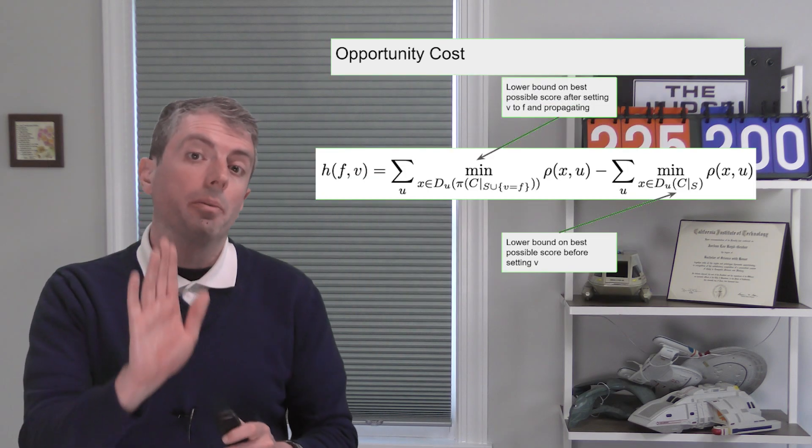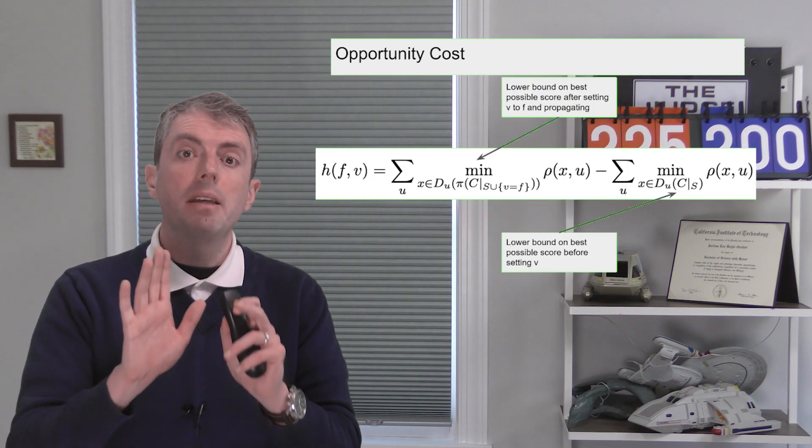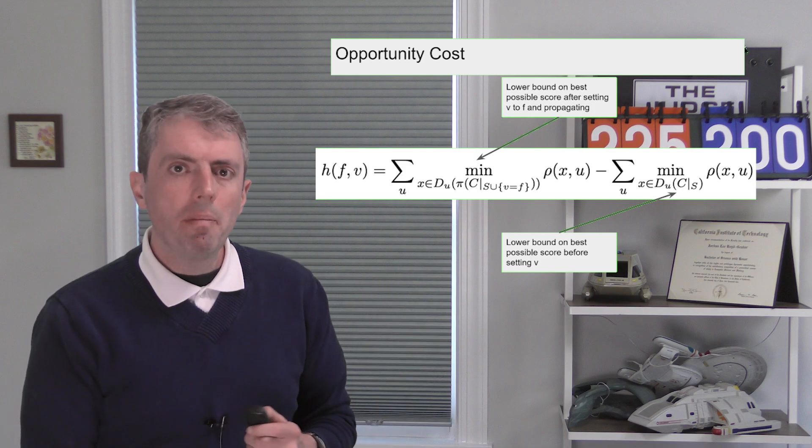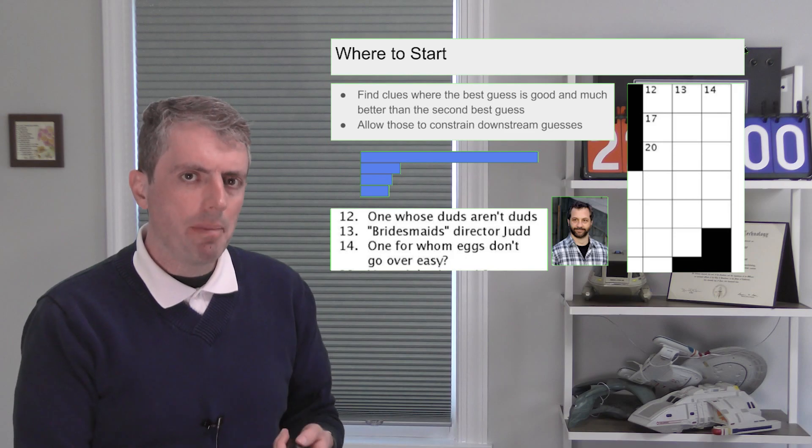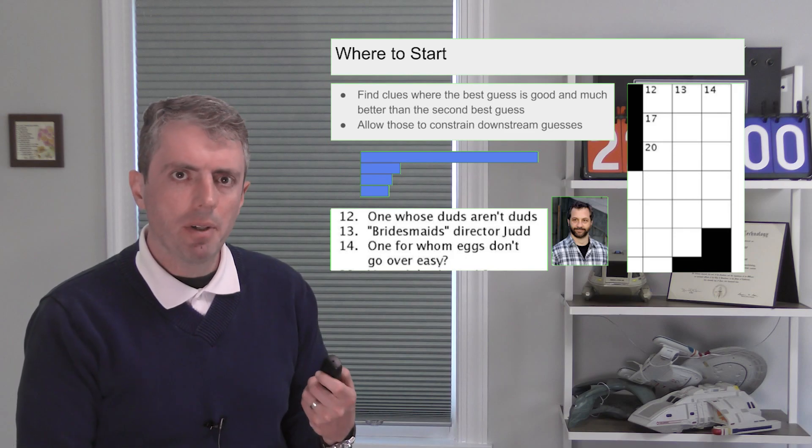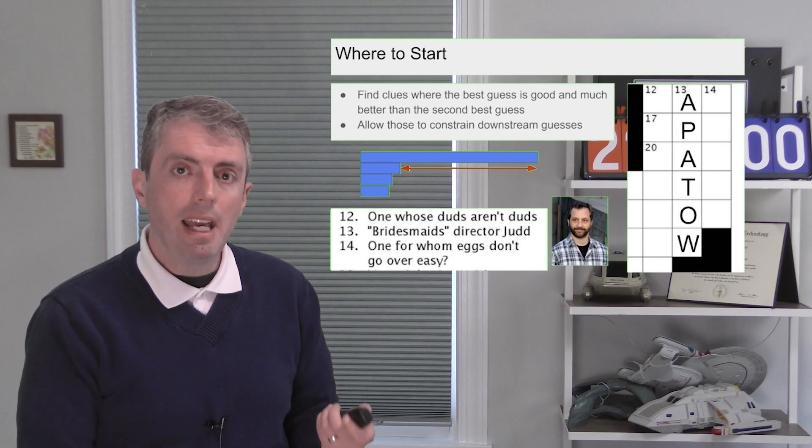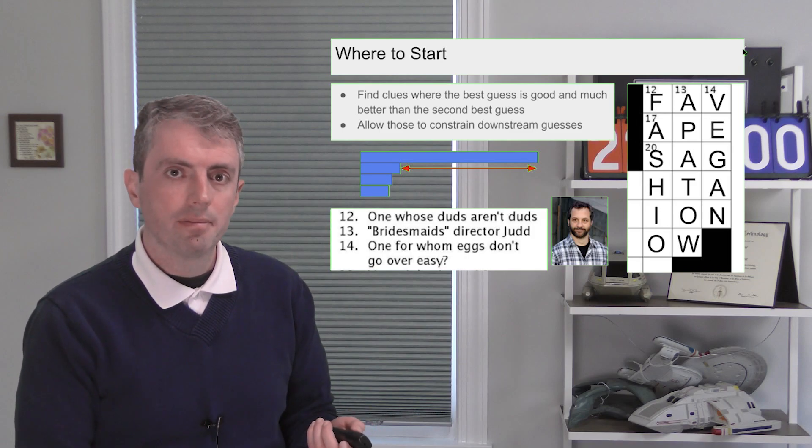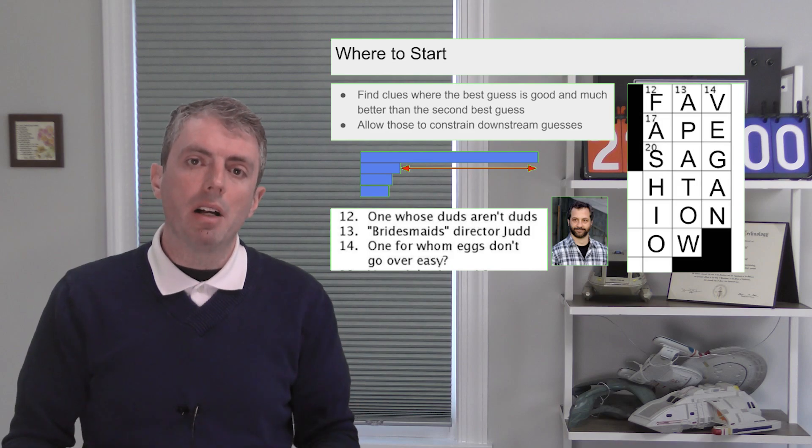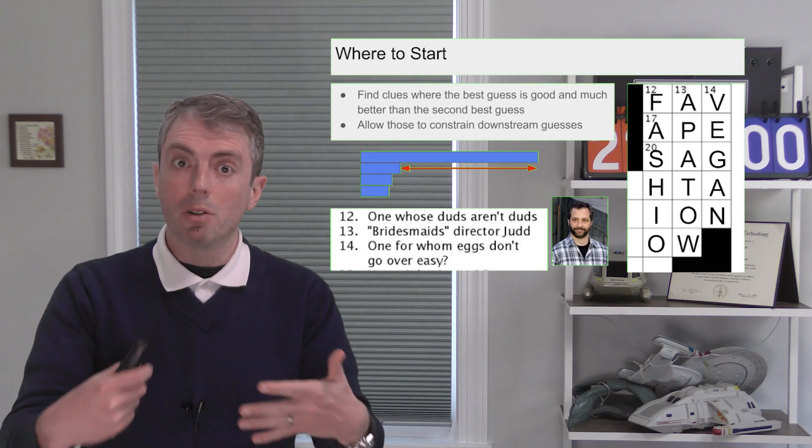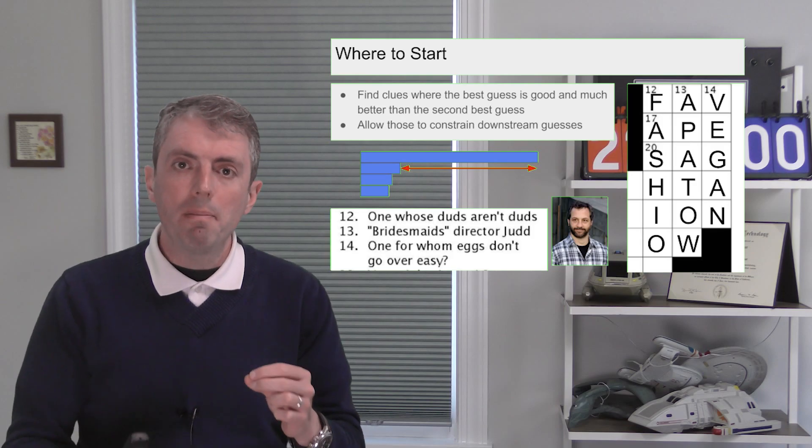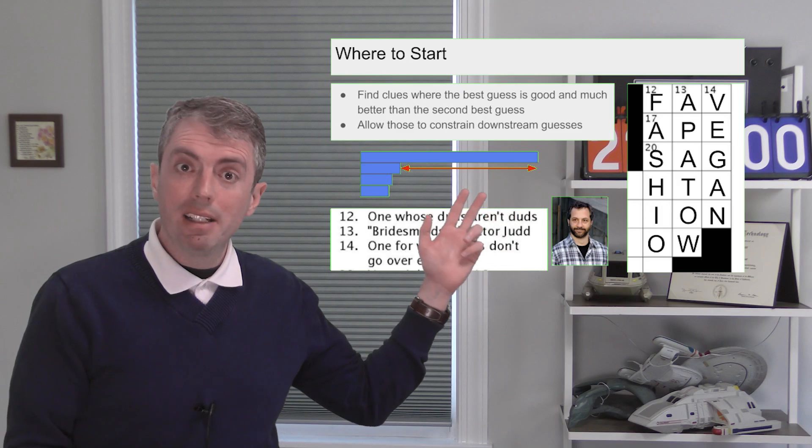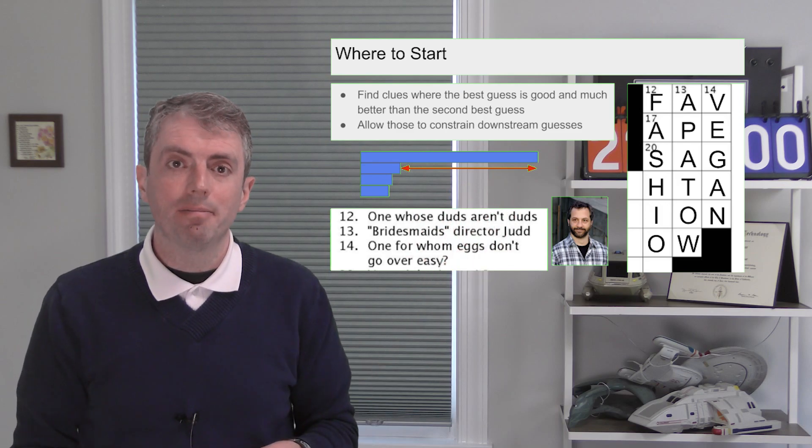Searching through possibilities in the right order is important. For each clue, it keeps track of the gap between the first best answer and the next best answer. Remember how I started with the Judd Apatow clue here? Same idea. I'm pretty sure I know this. After I fill in Apatow, I can get the other clues around it. This should remind you of the buzzer module for answering pyramidal quiz bowl questions. Only buzz in when the score is high and there's a big gap between the top answer and the next answer.